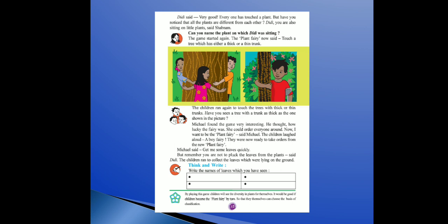The children ran to collect the leaves which were lying on the ground. Lying means gire hue. Children daude aur ground pe gire hue leaves collect karne ke liye ready ho gaye. Think and write: write the names of leaves which you have seen — neem leaf, peepal leaf, banyan leaf, basil leaf.